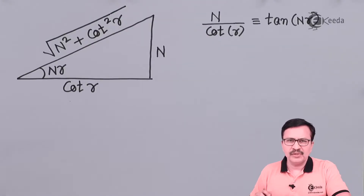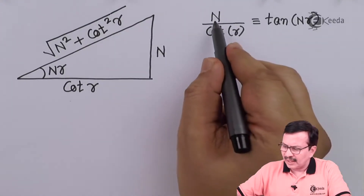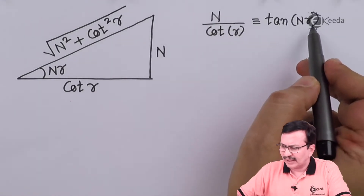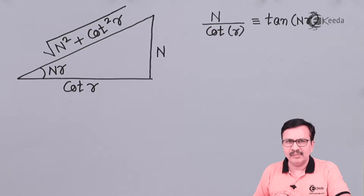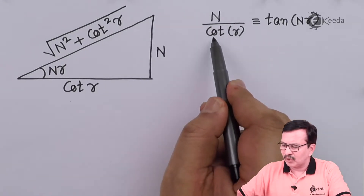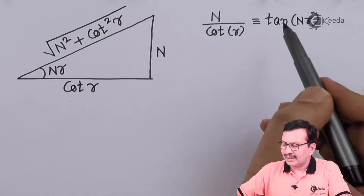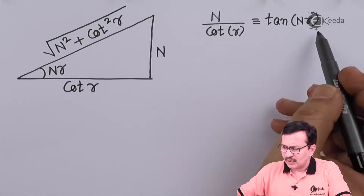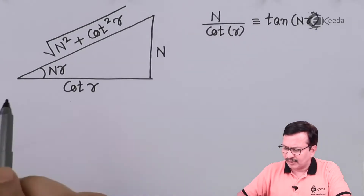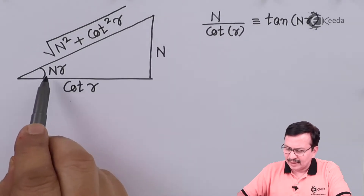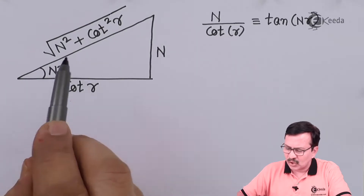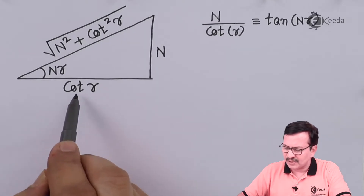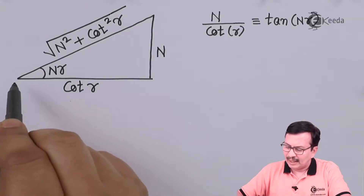The equation that we have obtained is n·tan(γ) is equal to tan(nγ). This can alternatively be written as n upon cot(γ). But tan(nγ) is nothing but the slope. So I complete a triangle with the help of nγ. Tan(nγ) is the opposite side which is n, divided by the adjacent side which is equal to cot(γ).